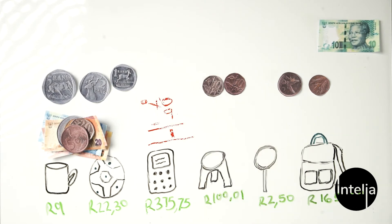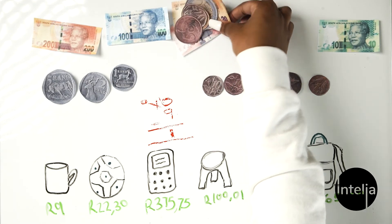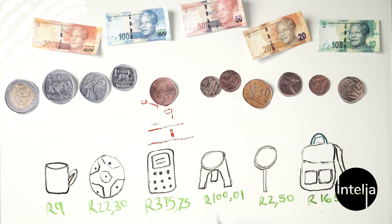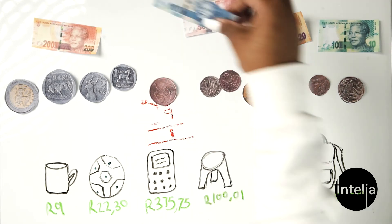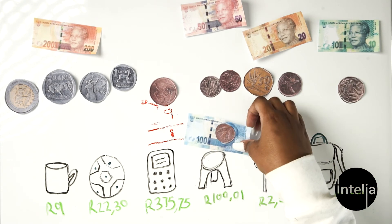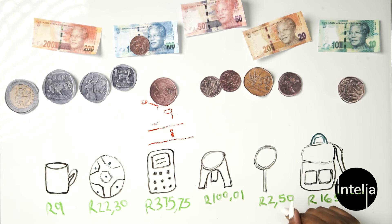If you ever get confused, you can use your addition method to add up your money and make sure you have the right amount for whatever you want to buy. Now let's move on to the chair. The chair is 100 rand and 1 cent. You already have your 100 rand banknote, and you have 1 cent, so that would be the cost of the chair.